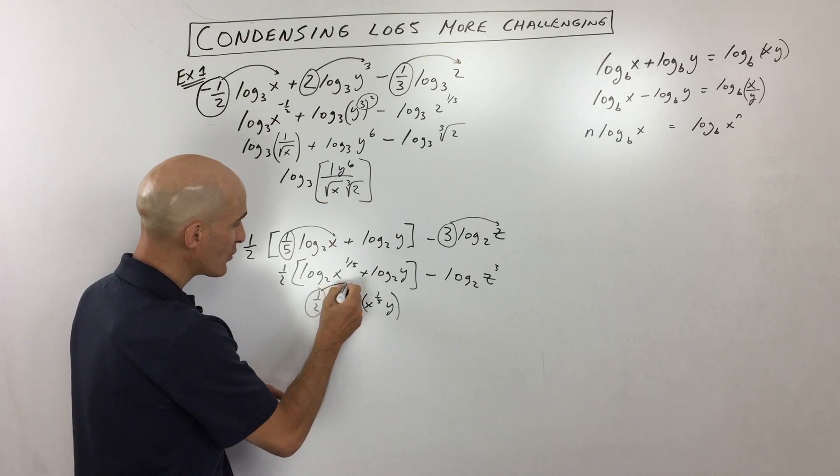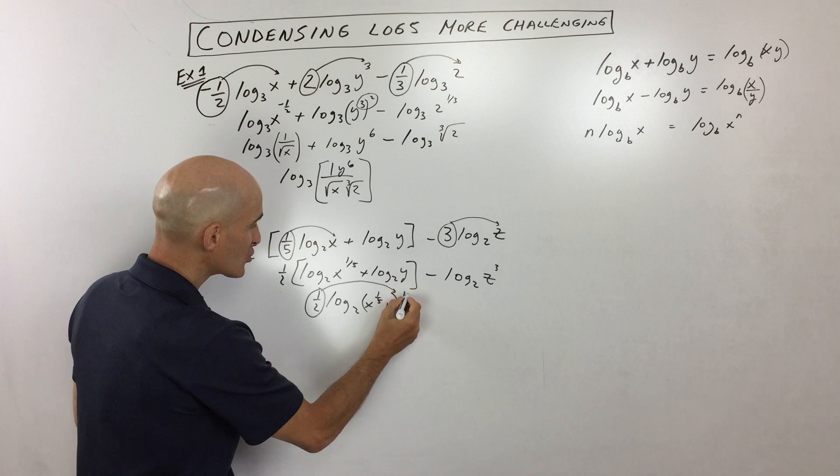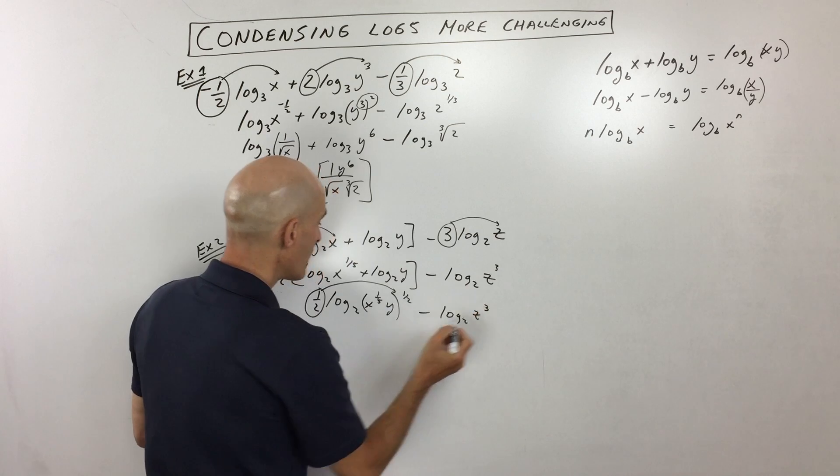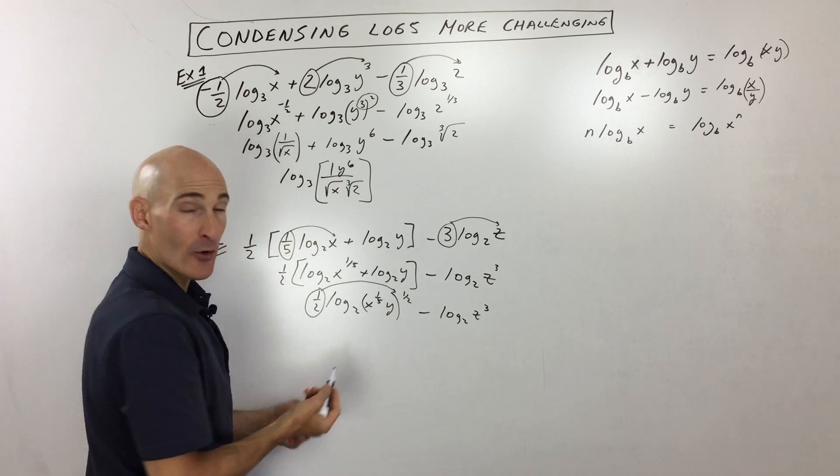Now remember, when you have that coefficient, you can bring this up as a power. So I'm just going to show that right there. And then over here, we have minus log base 2 of z cubed. Now when you have a power to a power, you multiply, right?